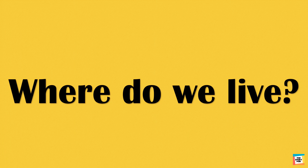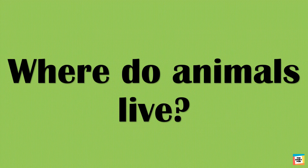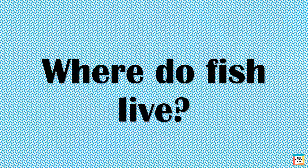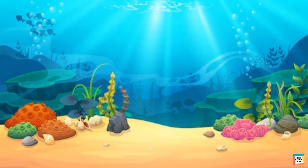So kids, can you tell me where do we live? We live in the city. And where do animals live? Very good. Animals live in the forest. And where does fish live? Fish lives in the sea, under water.